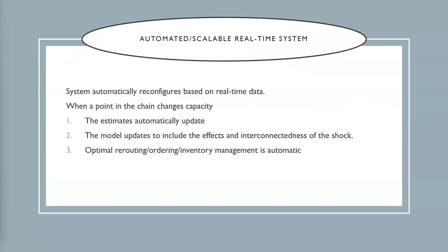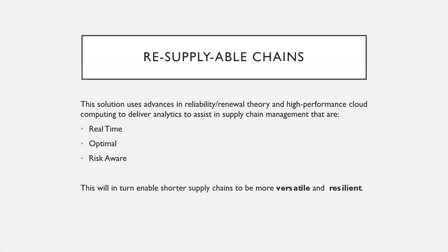Because the system is based upon real-time data, it will automatically be updated whenever there is a change or reconfiguration to the supply chain. Making supply chain decisions that are based upon real-time data and that are optimized to be risk-aware will help supply chains to be more versatile and resilient.